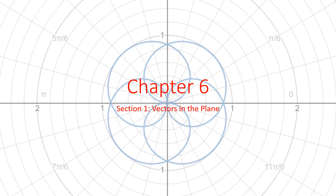Welcome back to Chapter 6. We are going to be finishing up our little unit on trig, and this is some applications of trig. It doesn't use a lot of what we've been doing, aside from having angles and sines and cosines of angles and things like that, but we're going to expand what we're doing to do some other cool things. These first couple topics are about vectors. We'll also be looking at parametric equations and polar equations.